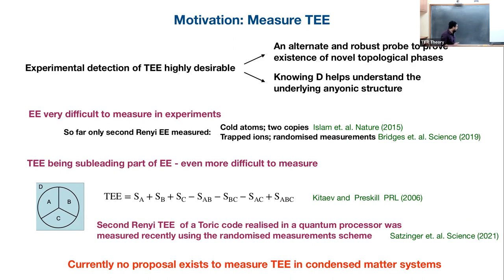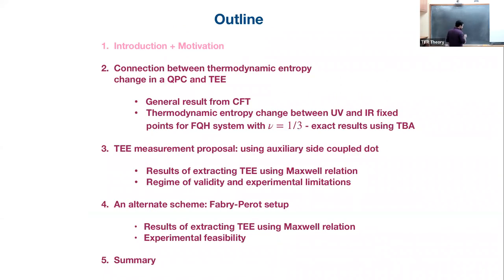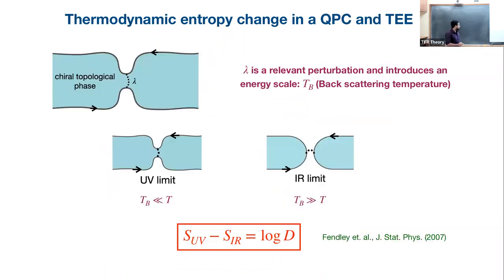Nevertheless, it's a remarkable achievement. But what I want to point out is that there is no proposal to measure topological entanglement entropy in interacting matter — like fractional quantum Hall systems. And that's the proposal we are putting forward. Let me give a brief outline of my talk. I will talk about this connection between TEE and an entropy difference that happens in a quantum point contact formed out of a fractional quantum Hall state.